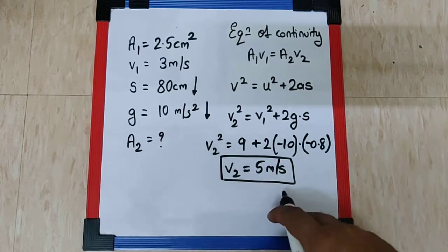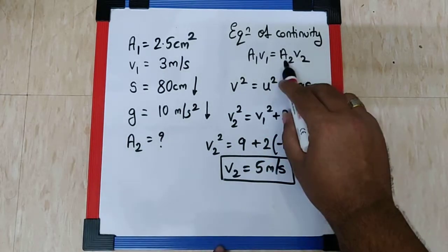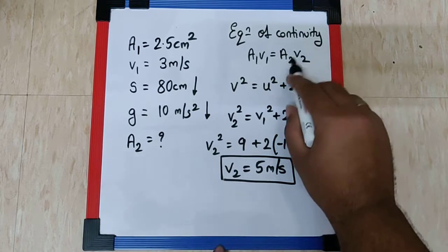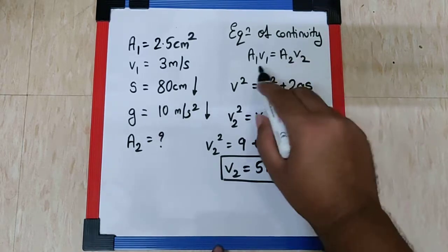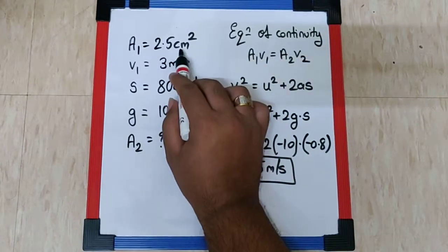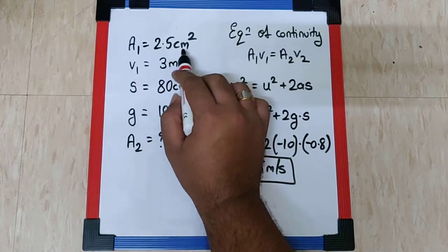Now obviously this is not the final answer. We want the answer of A2. And luckily in the options, A2 has been given in centimeter square.